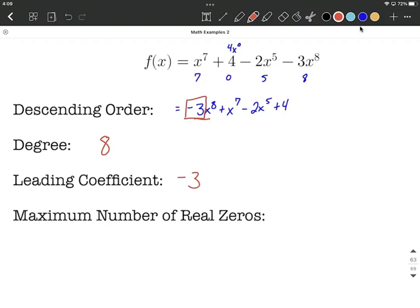And finally, the maximum number of real zeros is going to correspond with whatever the degree of the polynomial is. So in our case, the degree of the polynomial is 8, so our maximum number of real zeros is also going to be 8.